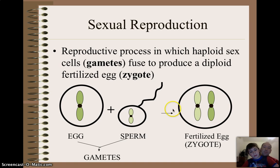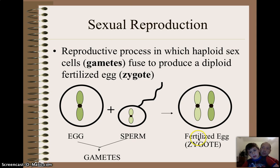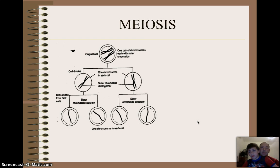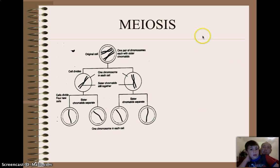Now, just a little birds and the bees here. Basically, eggs bash with sperm to create a zygote, which is a fertilized egg. This eventually will grow over 10 months inside mom and create a mini-you. How fun. So how do we get eggs and sperm? Well, through the process of meiosis.